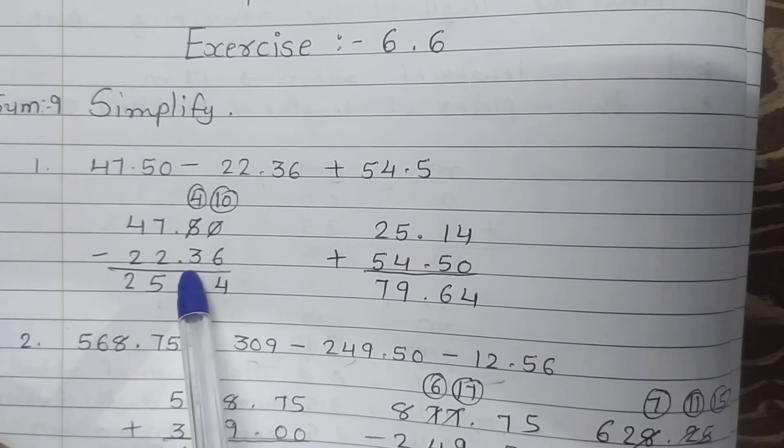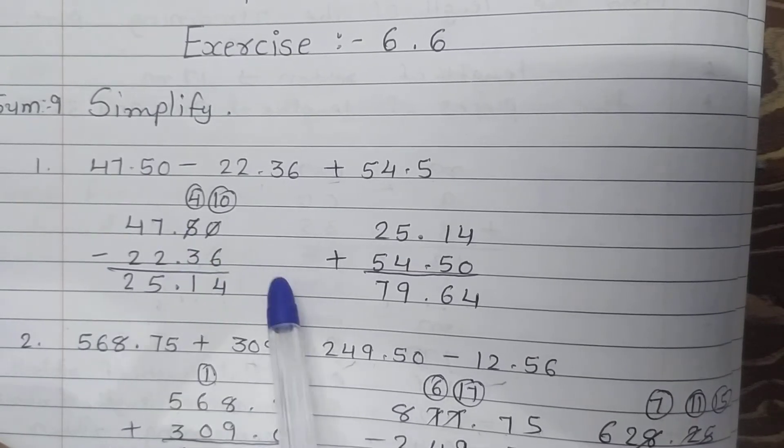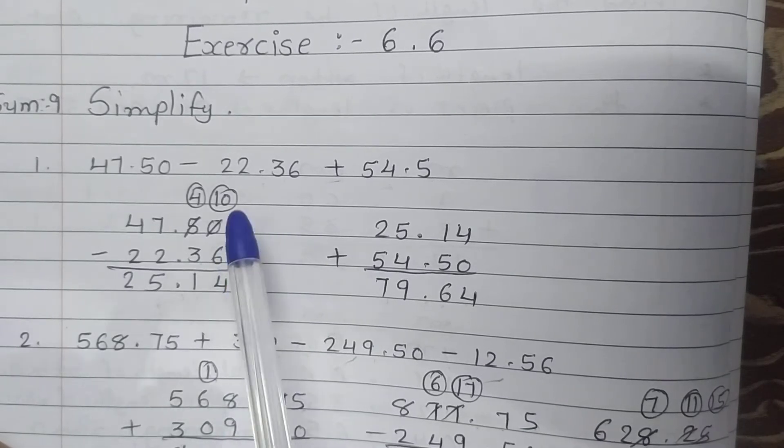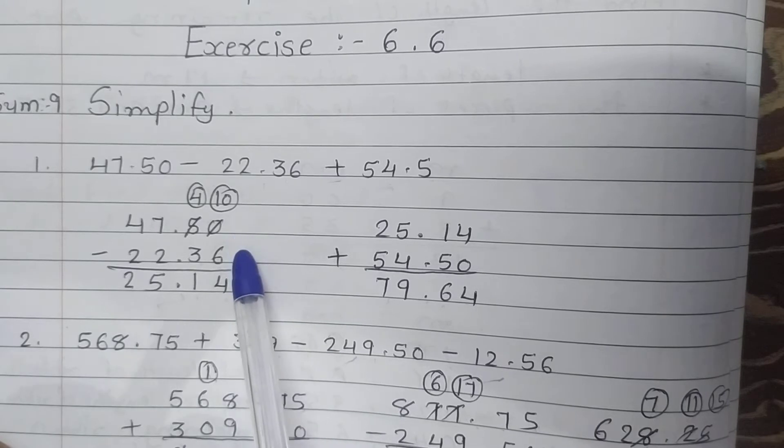So 47.50 minus 22.36. Write down point under point and arrange the numbers this way. Now 0 minus 6 is not possible. Take 10 borrow.